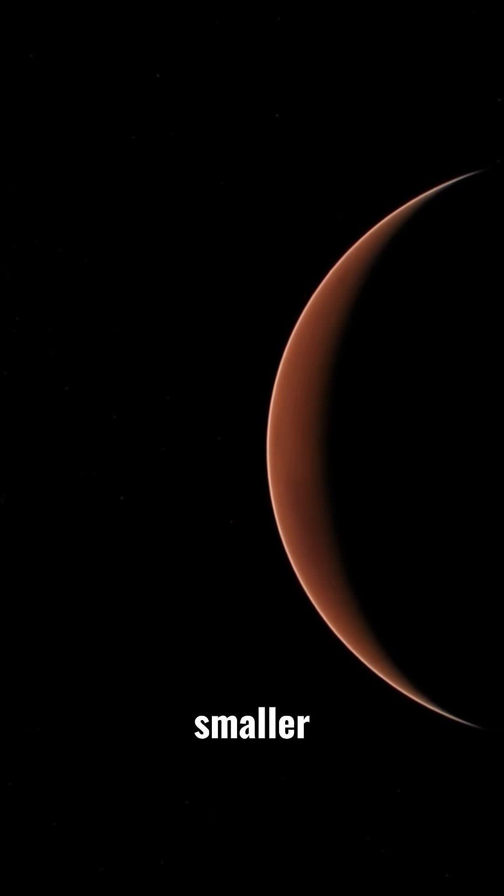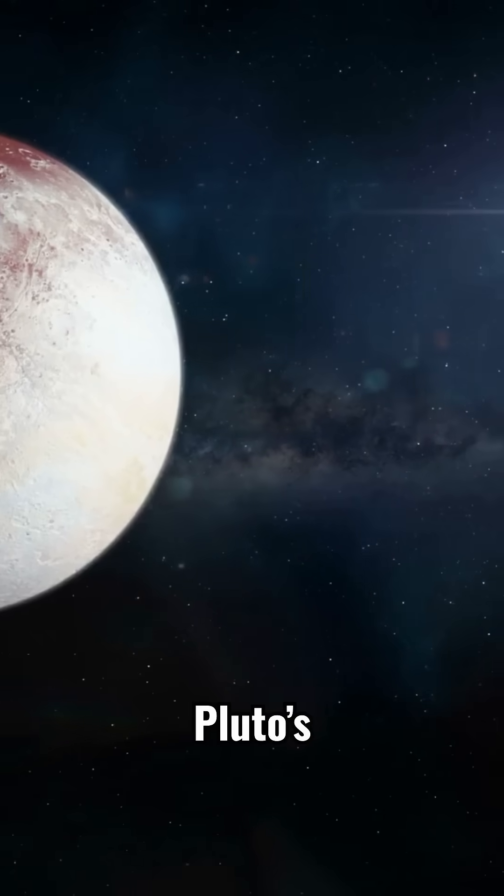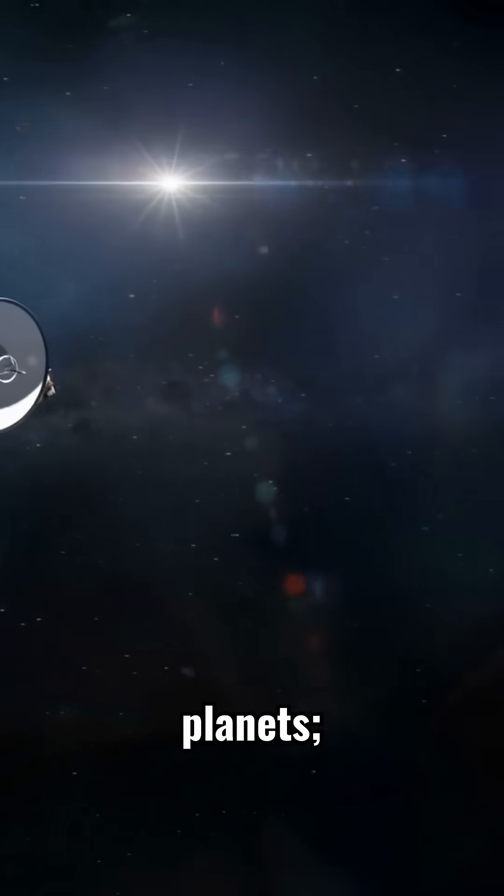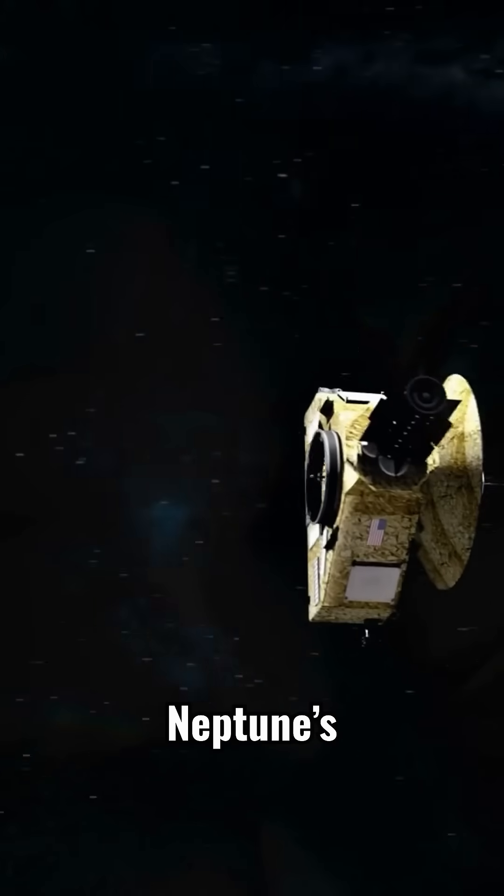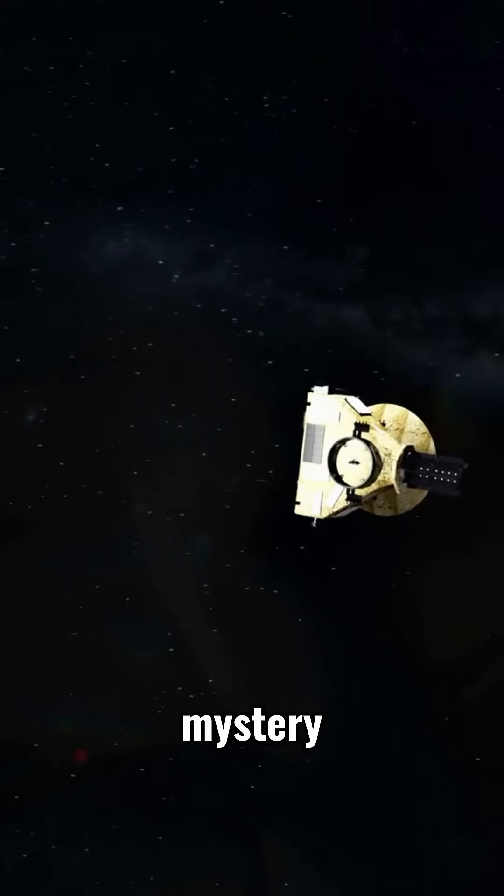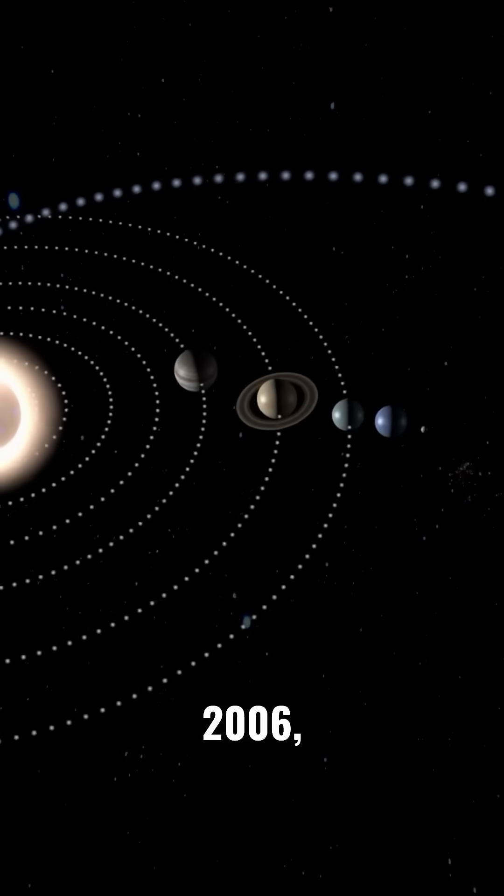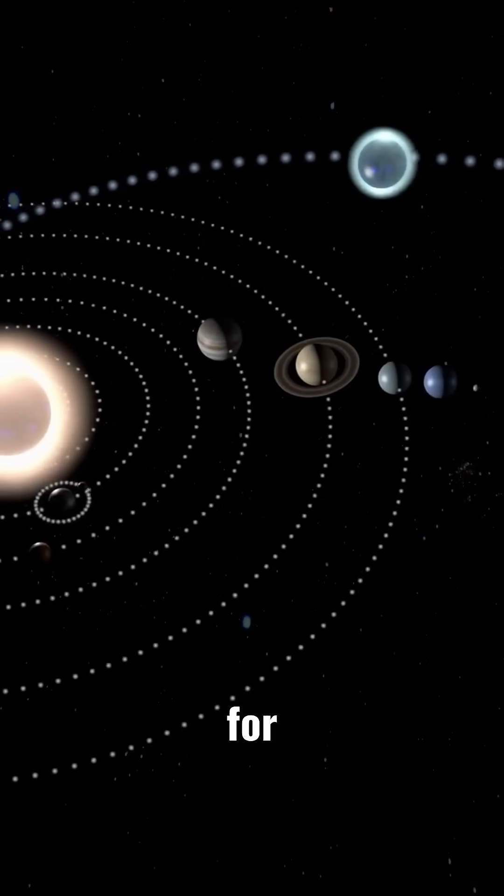Scientists realized Pluto, smaller than our moon, has an orbit that isn't like other planets. It's tilted and crosses Neptune's path, adding to the mystery. In 2006, the International Astronomical Union set three rules for a planet.